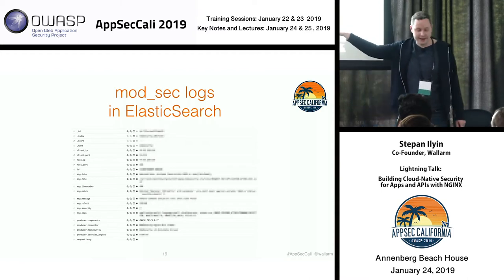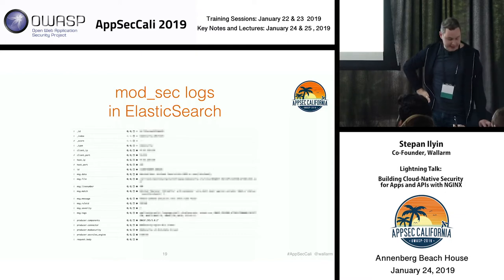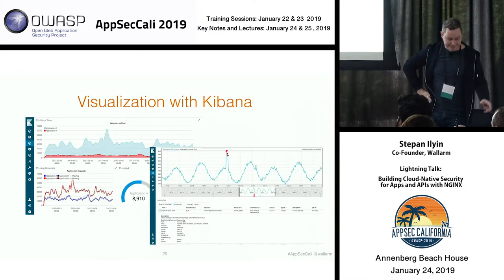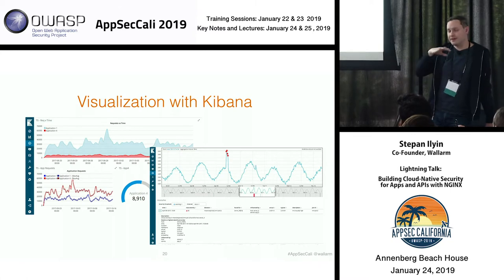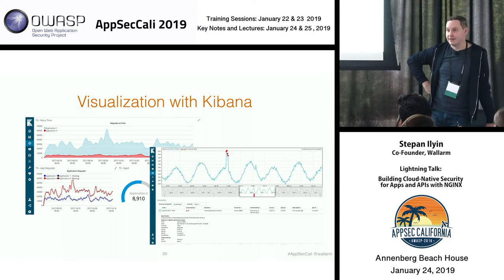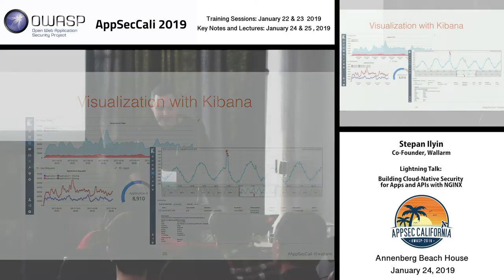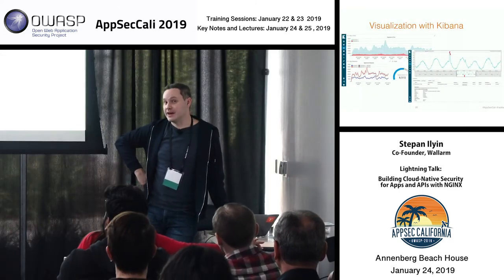After you set up everything, you can open the Elasticsearch UI and see all the events from ModSecurity about all the attacks with details. You already have Elasticsearch; you can set up Kibana and run it from Docker with predefined values. You can set up different dashboards and have stats on how many attacks you see, how many SQL injection requests, where the application responds with 500 error codes. It's pretty cool to put on a TV screen somewhere in the office.